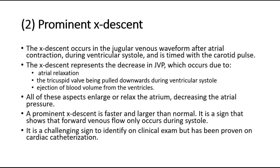The second abnormality is a prominent X-descent. The X-descent occurs in the jugular venous waveform after atrial contraction, during ventricular systole, and is timed with the carotid pulse. The X-descent represents the decrease in JVP, which occurs due to atrial relaxation, the tricuspid valve being pulled downwards during ventricular systole, and ejection of blood volume from the ventricles. All of these aspects enlarge or relax the atrium, decreasing the atrial pressure.